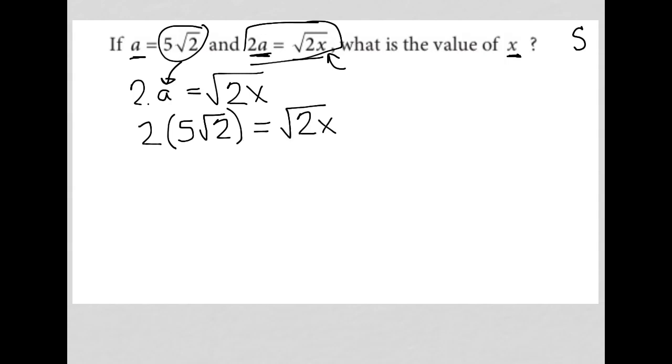Now all that's left is to simplify and isolate x to get my answer. So 2 times 5√2 is 10√2 equals √(2x). If I want to get x out of the square root there, I'm going to square both sides, because that's how we remove radicals.